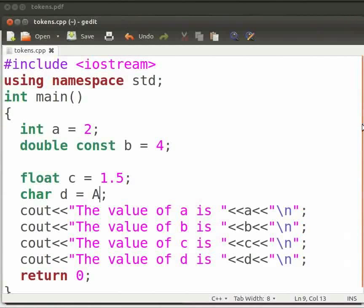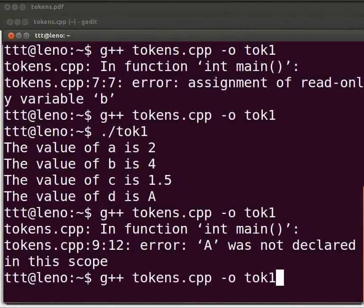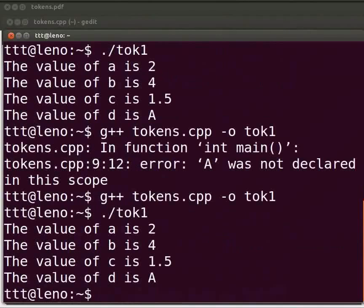This is because anything within the single quotes is considered as a character value. And here we have declared d as a character variable. Let us fix the error. Type single quotes at line number 9 here. Now click on save. Let us execute. Come back to our terminal. Now compile as before. Execute as before. Yes, it is working.